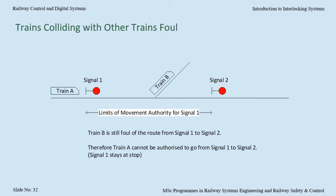Thirdly, there is the train colliding with a train that, whilst not in the direct line of route, is foul of the route.